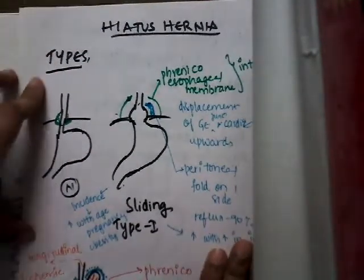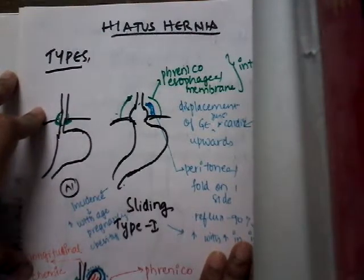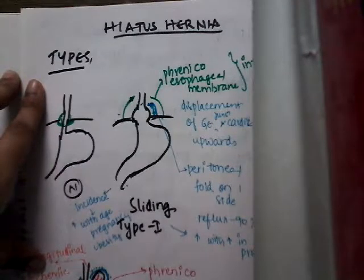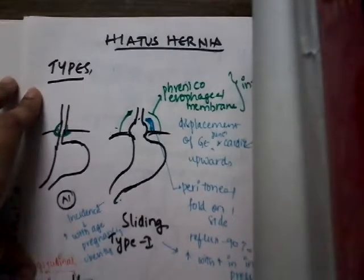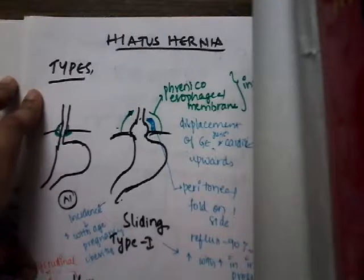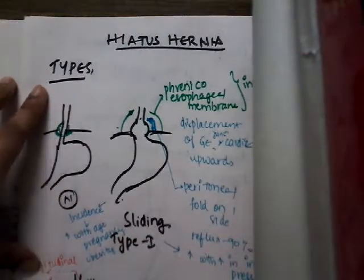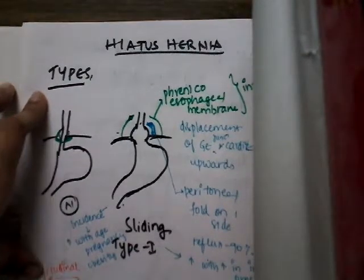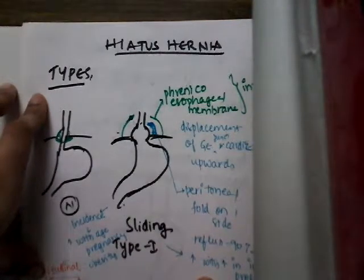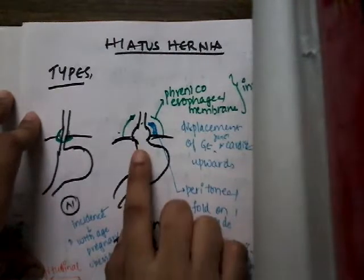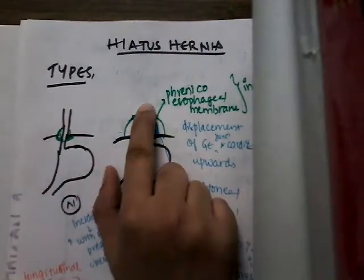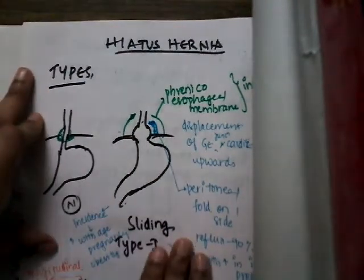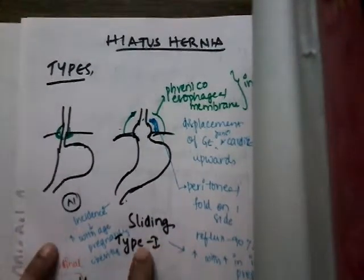Welcome to this lecture series reviewing gastroesophageal junction disorders. We will focus on hiatus hernia. Hiatus hernia occurs whenever a hollow viscus present in the abdomen enters the thorax through the diaphragm. There are four major types of hiatus hernia. The first type is sliding hiatus hernia.